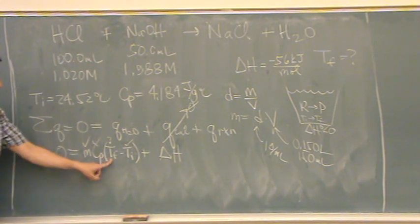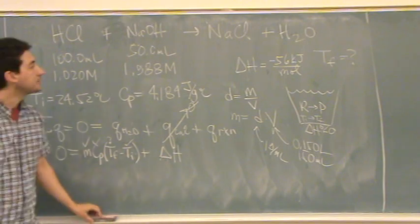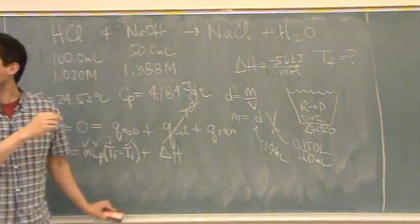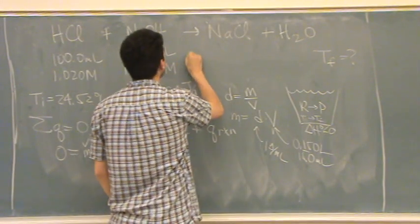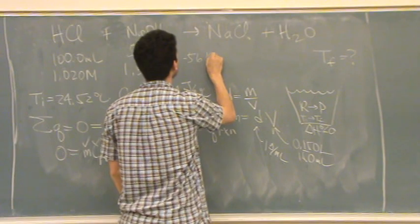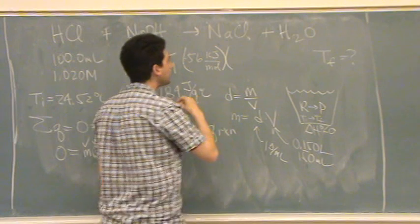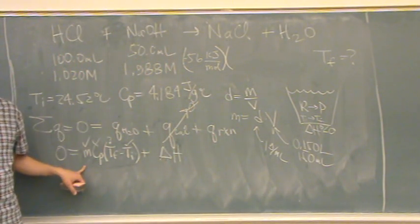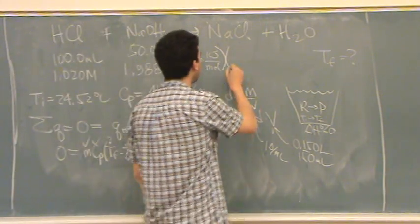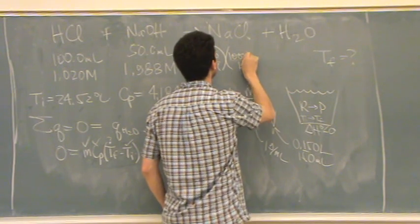Alright. So I'm finding T final, I got T initial, got heat capacity, got specific heat, got mass. Delta H — delta H is here, but I've got to convert it a little bit. I'm going to use negative 56 kJ per mole. First, I need to get that in joules because this equation works in joules. It's very common that you'll have to convert delta H — one kilojoule is one thousand joules.